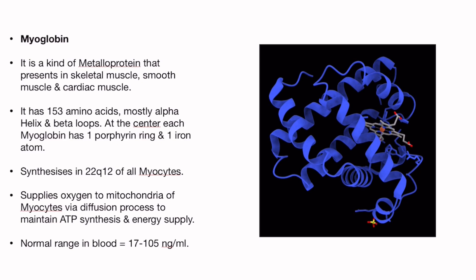Myoglobin is synthesized by all myocytes — all muscle cells — especially encoded on chromosome 22, q arm, at the 12th base pair. Its function is to supply oxygen to the mitochondria of myocytes via diffusion, to maintain ATP synthesis and energy supply.